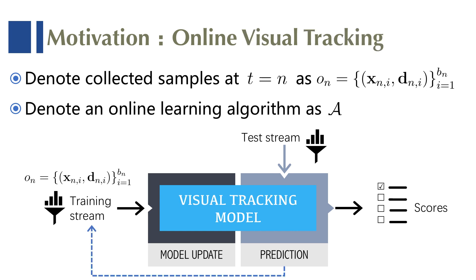Since it is just right for visual tracking, online learning has been playing an important role in state-of-the-art trackers, such as MDNet-style and Atom-style trackers.